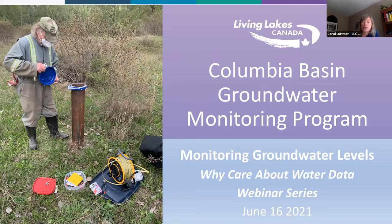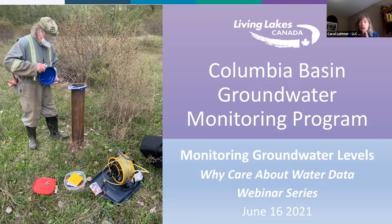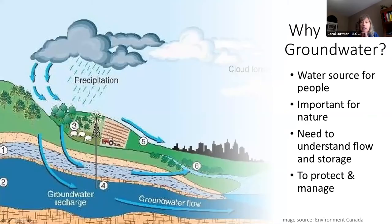With climate change, we're expecting surface water supplies to become less reliable due to changes in quality and quantity, so we are expecting increasing pressure on groundwater. Many rural residents have private domestic wells that supply their homes. Groundwater discharges to lakes and creeks, and because it has been underground for a long time, it is relatively cool — about seven degrees in our region — providing cool water that helps maintain base flows and keep rivers cool, especially during hot and dry summer months.